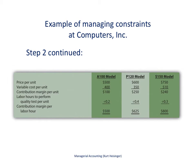Since labor hours is our constraint in quality testing, we figure out the contribution margin per labor hour for each product. The contribution margin per unit is $100 for the A100 model, $250 for P120, and $240 for the S150 tablet. Dividing by the labor hours required per model gives us the contribution margin per labor hour: $500 for A100, $625 for P120, and $800 per labor hour for S150.